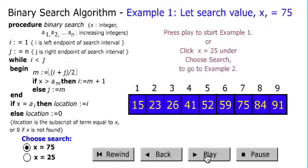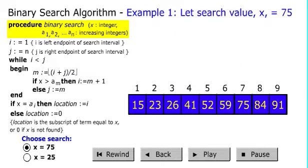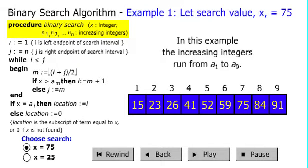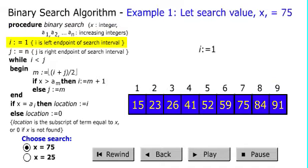The first step would be to pass the array with integers and the integer to search. i will be 1, which is the starting point. Usually in Java, arrays start at 0 but for this example, it starts at 1 and then the endpoint is 9.